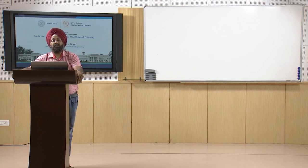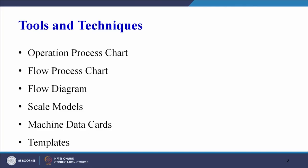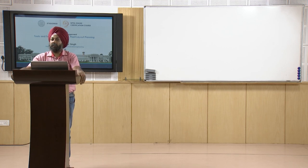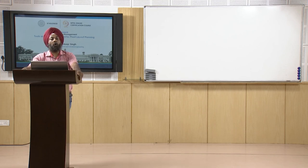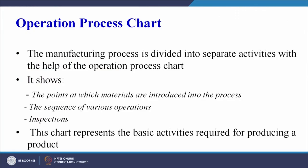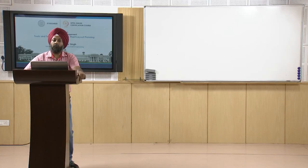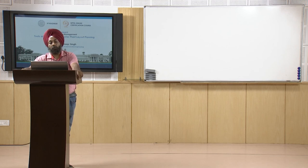The tools and techniques listed are: operation process chart, flow process chart, flow diagram, scale models, machine data cards, and templates. We will try to cover as many as possible in our session. For each, we have taken a diagram so that the explanation is clear. The first type is the operation process chart.